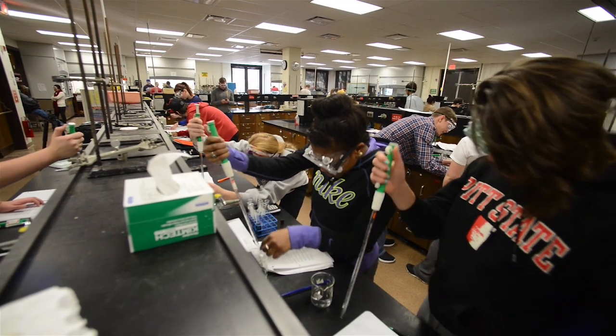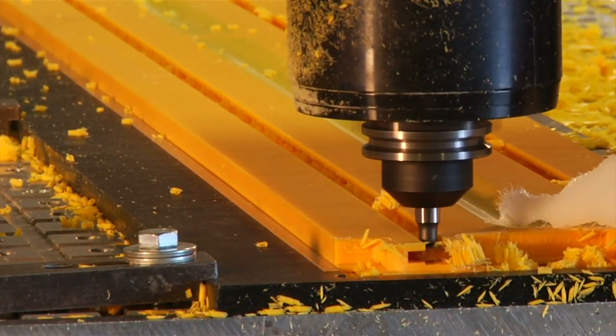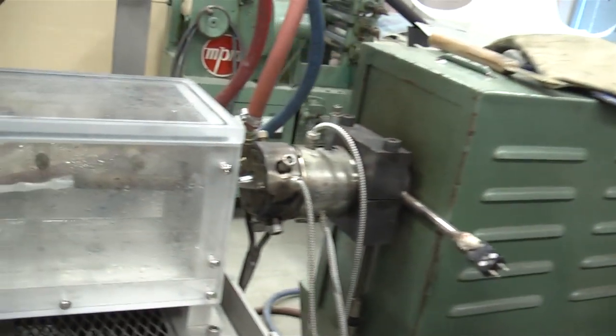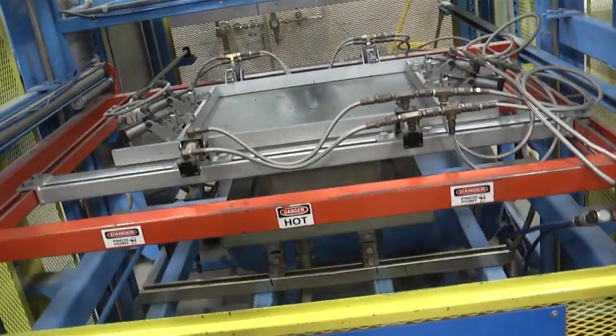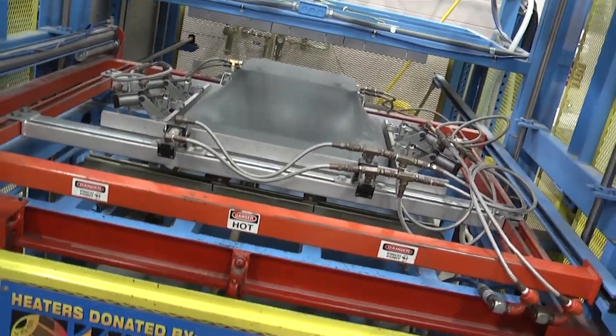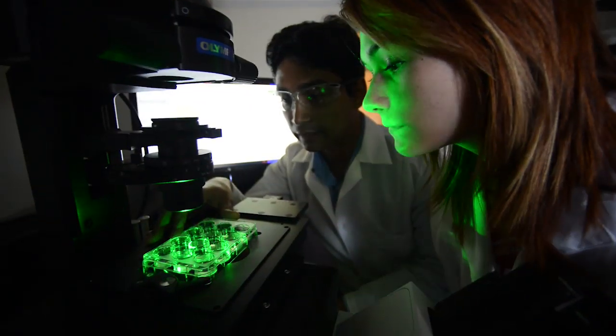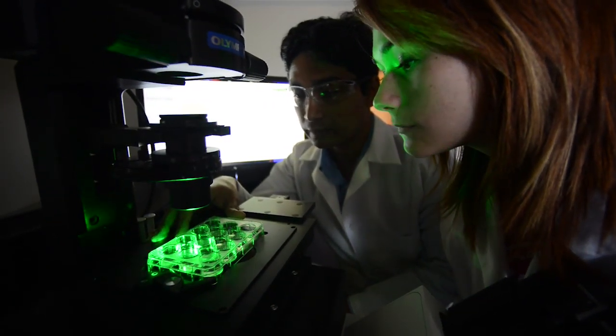In chemistry we give them the basics, so they learn all the basics of the chemistry. In plastic engineering department they learn how to use those skills to make a real material, and in Kansas Polymer Research Center they do the testing and all characterizations of the materials.